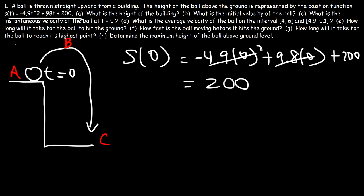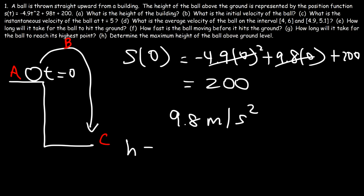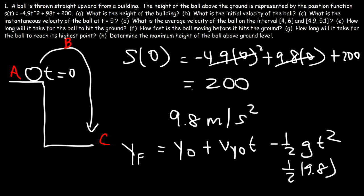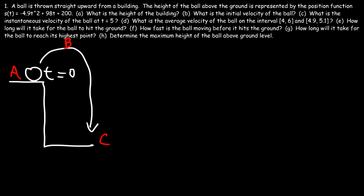Based on the coefficient 4.9, you can tell the units are meters per second. The acceleration due to gravity is 9.8 meters per second squared, and this formula comes from the physics equation: Y final equals Y initial plus V_Y_initial times T minus one-half G T squared, where G is 9.8. Half of 9.8 gives you 4.9. Since the acceleration is in meters per second squared, the height is in meters and time is in seconds. So the height of the building is 200 meters.